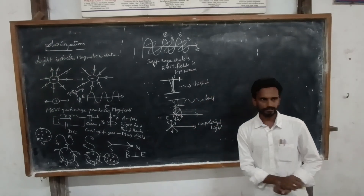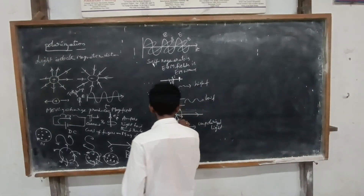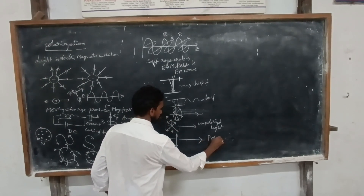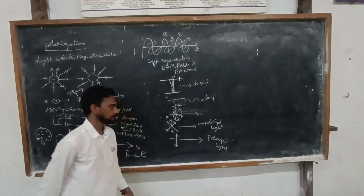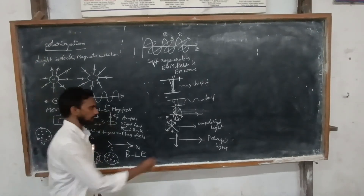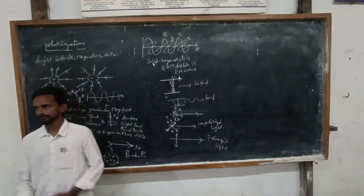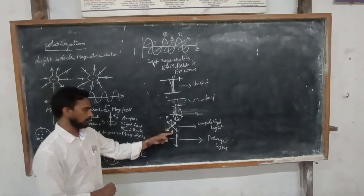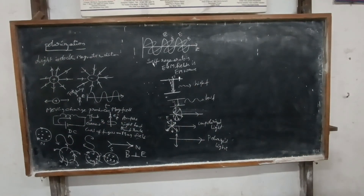If I restrict those electric field oscillations into a particular direction and chop down all the others, restricting the oscillations to one particular direction — that is polarization. Ordinary light will have oscillations in all directions, 360 degrees — oscillations of the electric field. If I restrict it to a particular direction, it is called polarization.